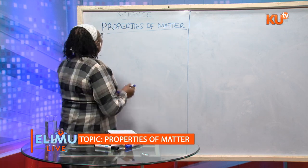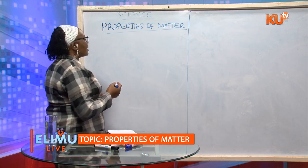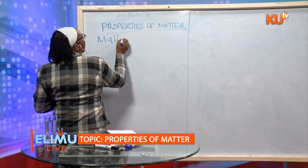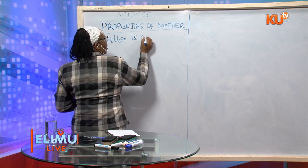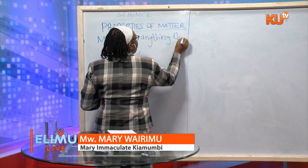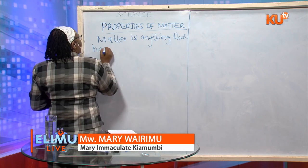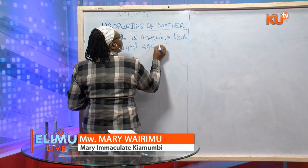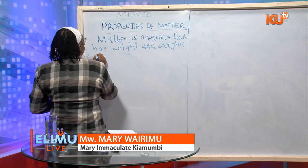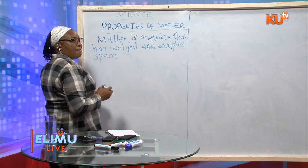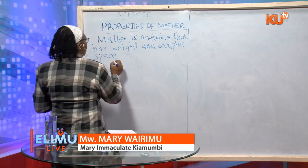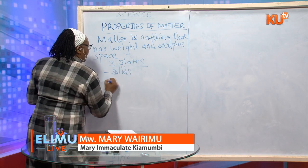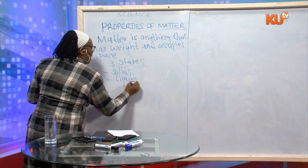Welcome. Properties of matter is what we are going to look at. Matter is anything that has weight and occupies space. We have three states of matter and the three states of matter are solids, liquids, and gases.